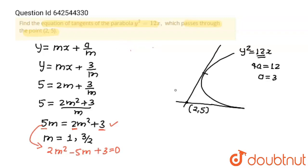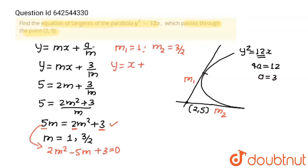There are 2 tangents possible. One root is 1, let its slope be m1, and the other slope be m2. So m1 = 1 and m2 = 3/2. Putting m1 = 1 first: y = x + 3/1, which gives y = x + 3. This is our first tangent.